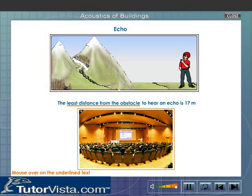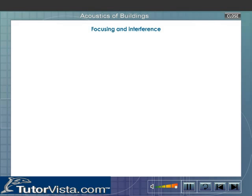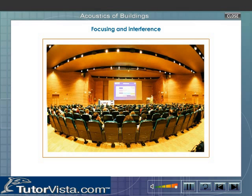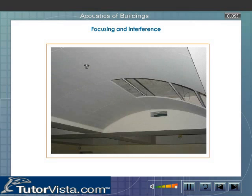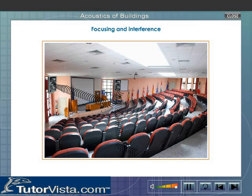Echoes must be eliminated. Echo will be less if the auditorium is house full. Focusing and interference. Unnecessary focusing of the sound should be avoided and there should not be any zone of poor audibility or region of silence. Hence, the curved surface of the walls or ceiling should be avoided. Due to the interference of sound, at some points the sound heard will be maximum and at some points minimum. To avoid this, the walls are made rough and more absorptive.